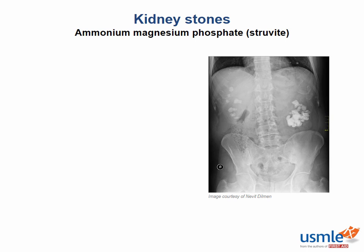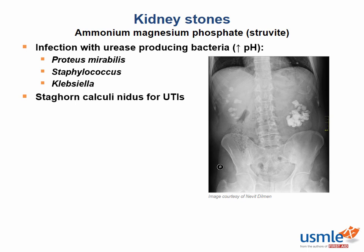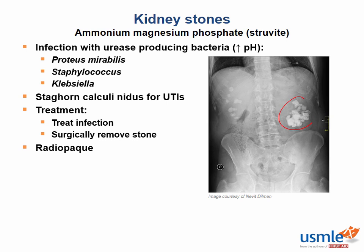The next type of stone is the ammonium magnesium phosphate stone, also known as the struvite stone. These occur when the urine pH is abnormally high, like during infections with urease-positive bacteria, which break down urea to produce ammonia. The usual culprits are Proteus mirabilis, Staphylococcus, or Klebsiella. The resulting staghorn calculi can be massive and are frequently a nidus for UTIs. Treatments include antibiotics for the infection and surgically removing the stone. As seen on x-ray, they are radio-opaque.